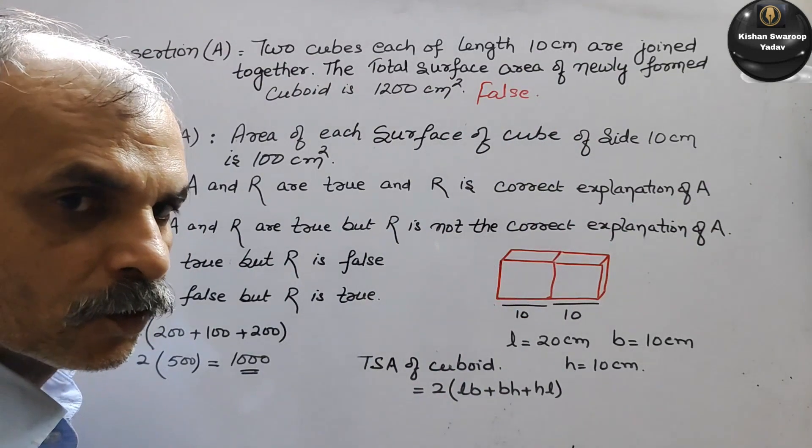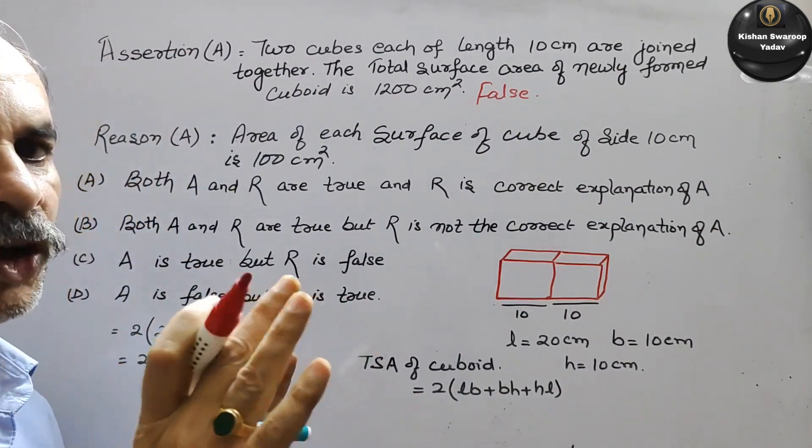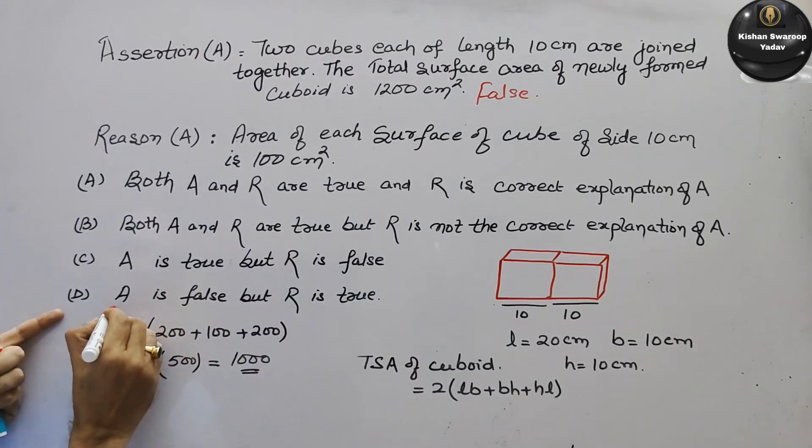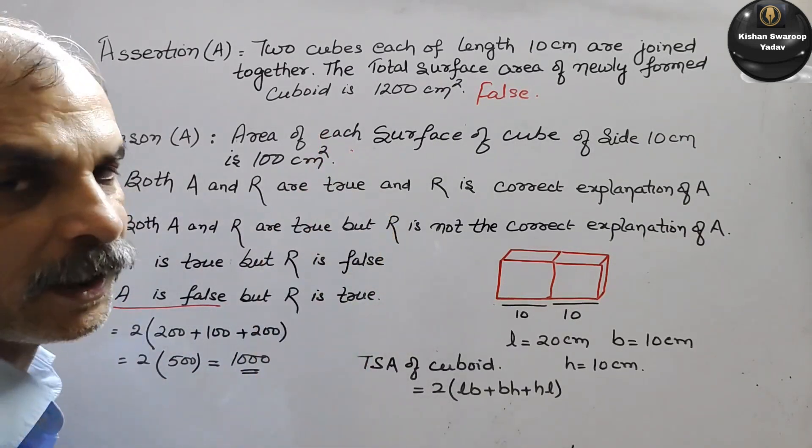In your options, only one place says assertion is false. See, this one. So that means D is your option. You don't even need to check the other one.